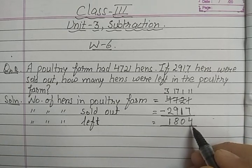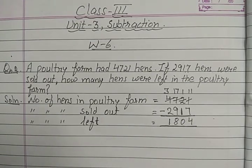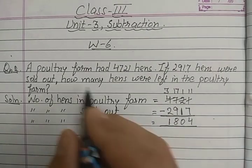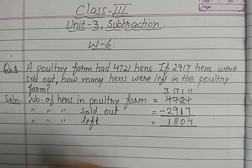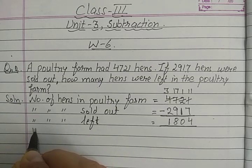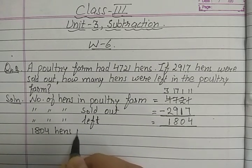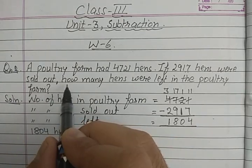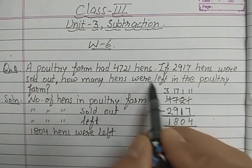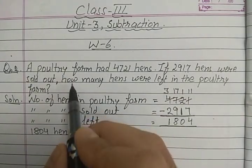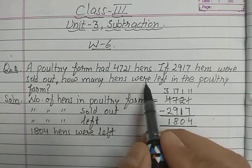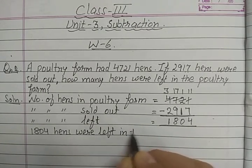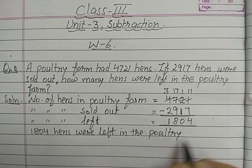So this is the number of hens that are left. The question asks how many hens were left in the poultry farm, so we write the answer: one thousand eight hundred and four hens were left in the poultry farm.